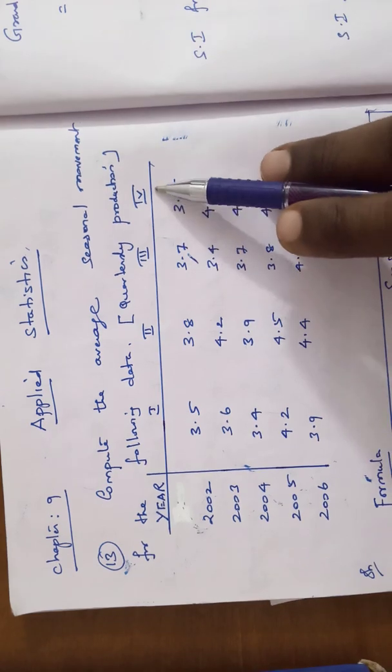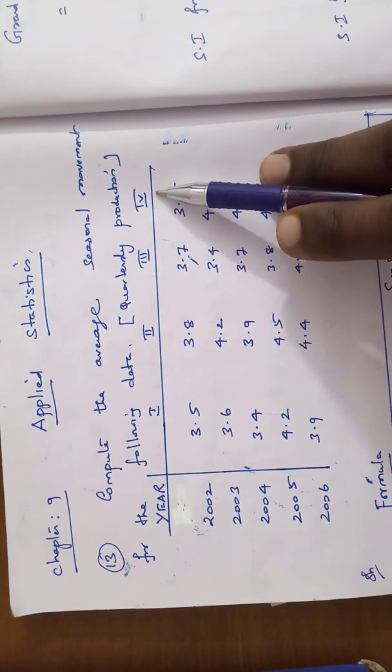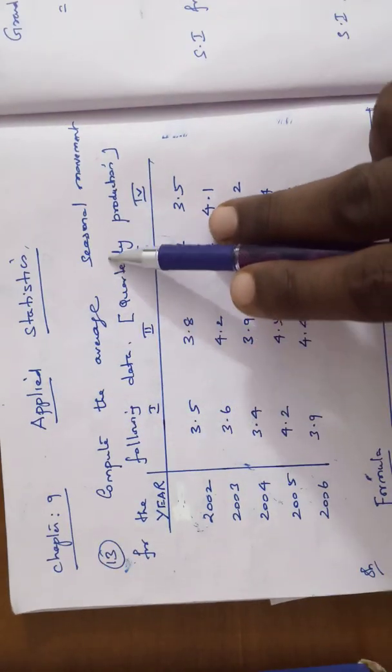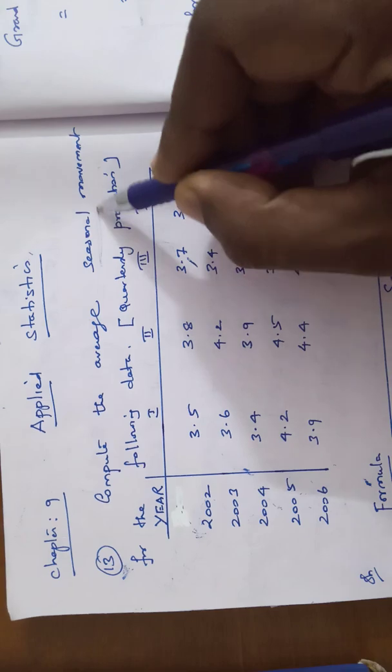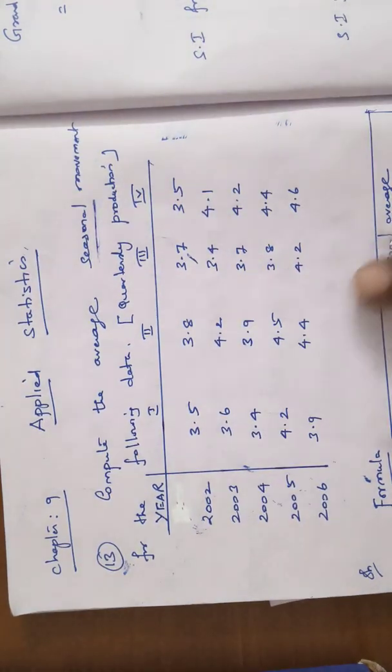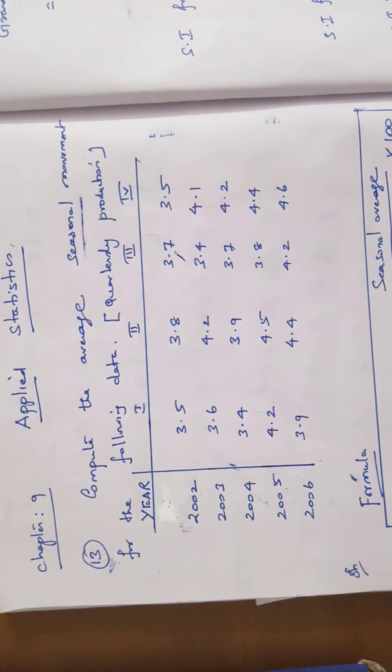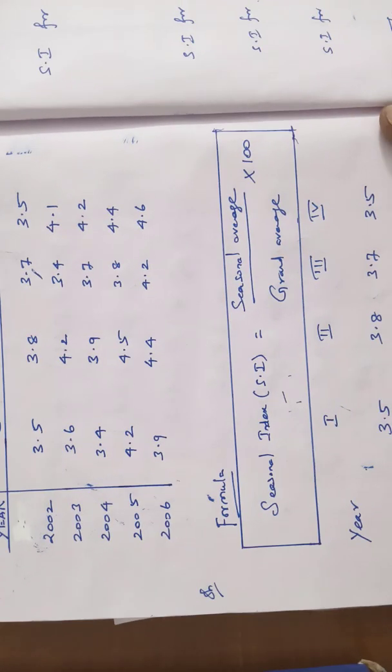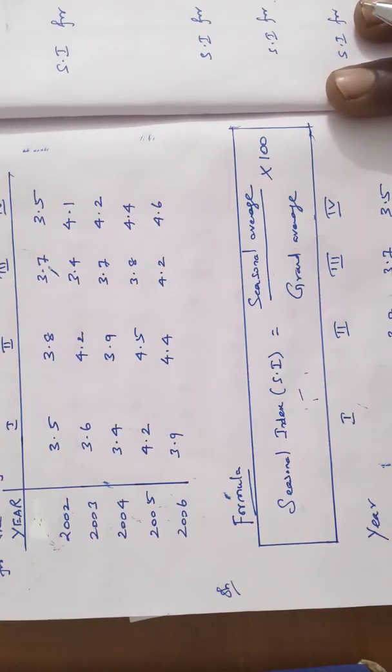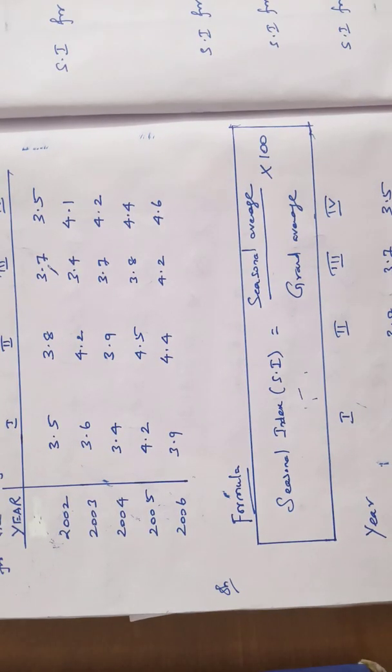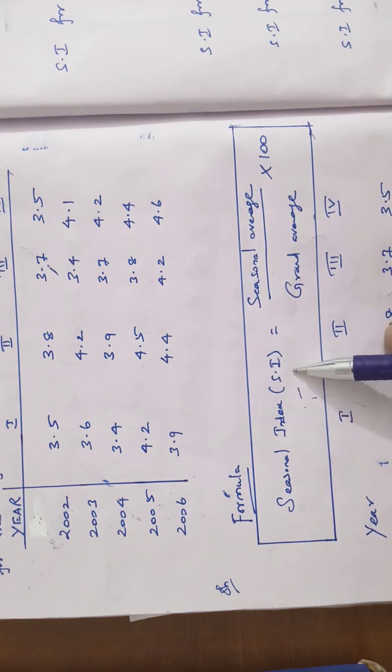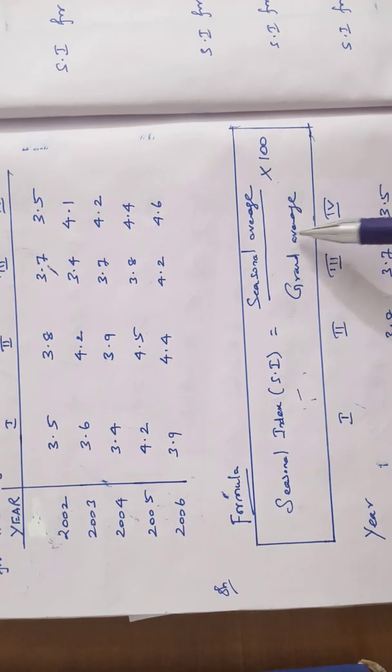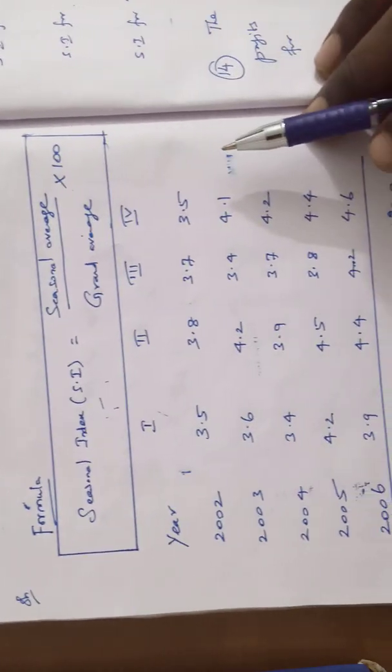The four quarterly average values are given in the table. Your aim is to compute the seasonal variation for the following data by using this average method. First you take the formula. Formula is seasonal index, this is the average method formula. Seasonal index can be taken as seasonal average by grand average into 100. This is the formula. One second, write down the problem.